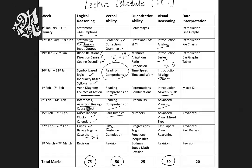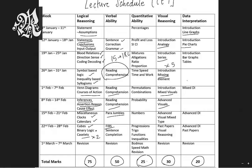Then you have the last two sections: data interpretation and quant. They don't have as much weight as the others — 25 and 20 marks respectively. In DI you have line graphs, pie charts, tables, bar charts, mixed, and advanced — these six types.